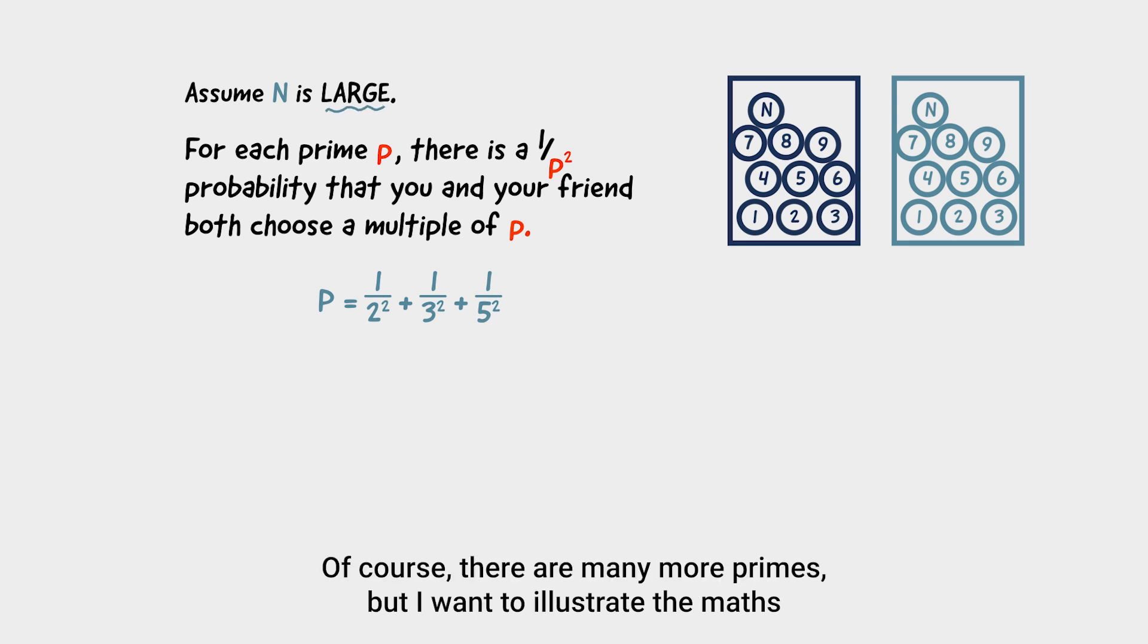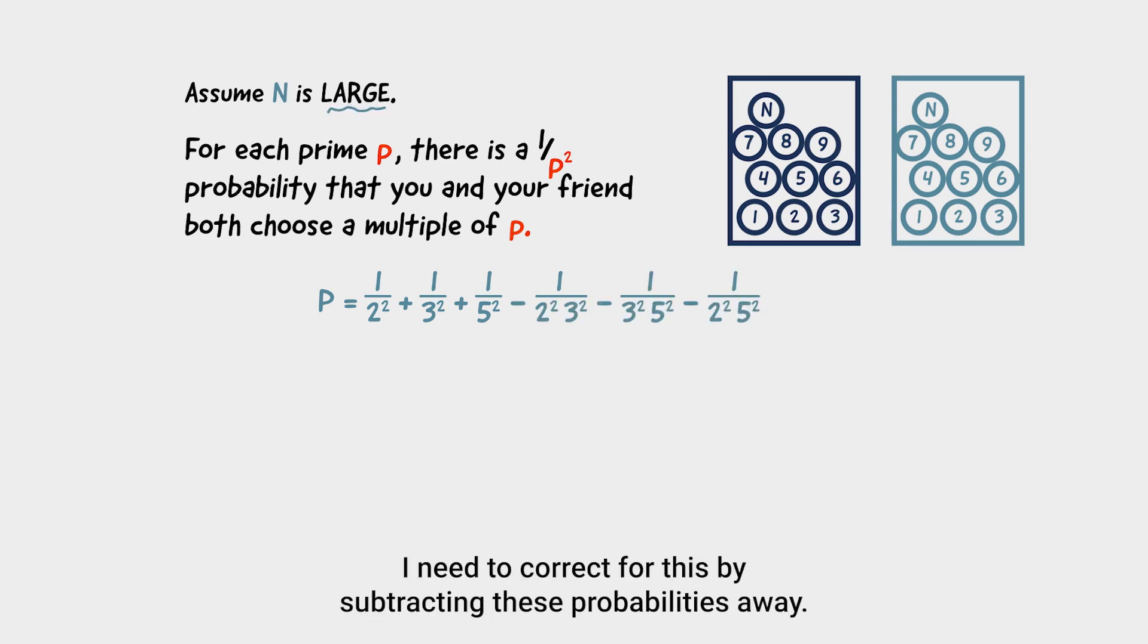Then summing these gives us something like this. Of course, there are many more primes, but I want to illustrate the maths using just 2, 3, and 5 for now. Remember, at this point, I have over-counted the numbers that are divisible by 2 and 3, and also the numbers that are divisible by 3 and 5, and the same for 2 and 5. What a mess! I need to correct for this by subtracting these probabilities away. Ah, that's better, except that it's not,